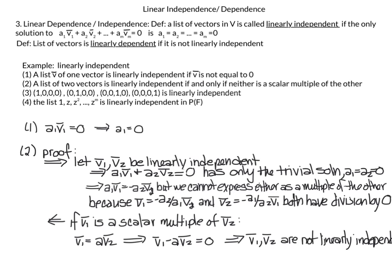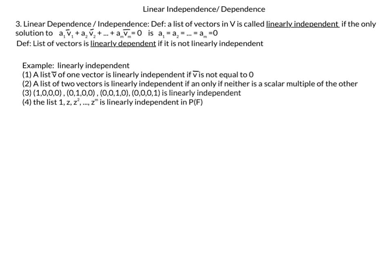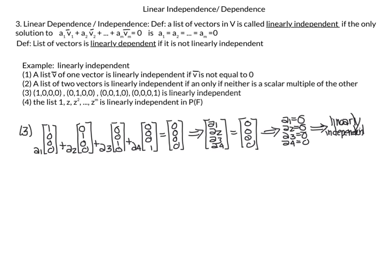Next example: the standard basis vectors e1, e2, e3, e4 in F^4, where e_i has all zeros except a 1 in the ith position. Writing the homogeneous equation a1·e1 + a2·e2 + a3·e3 + a4·e4 = 0 and multiplying out gives the vector (a1, a2, a3, a4) = (0,0,0,0), which implies a1 = a2 = a3 = a4 = 0. Therefore these vectors are linearly independent — only the trivial solution exists.